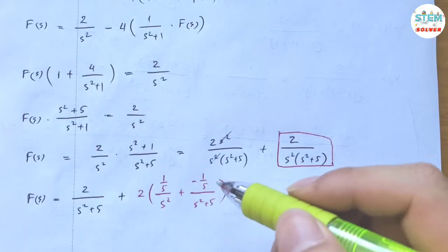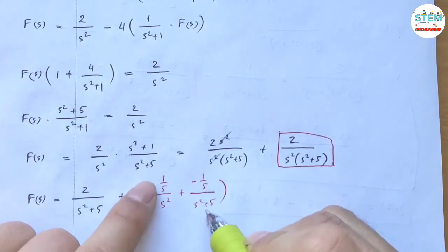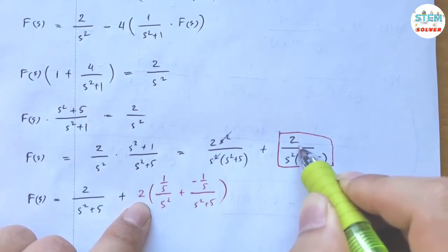If you're not sure, double check. So 1/5 times s² minus 1/5 times s² cancel out. 1/5 times 5, which is 1. And 1 times 2, which is 2, what we have on top. So this is correct.